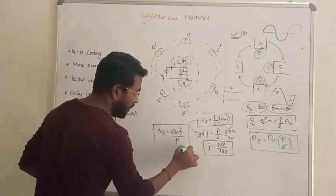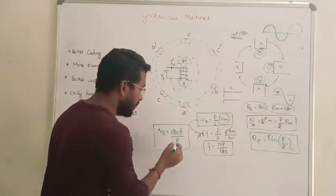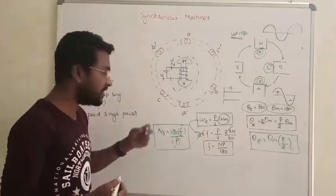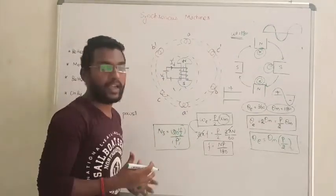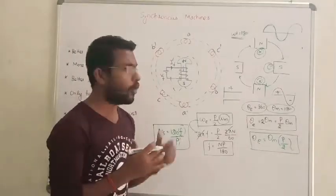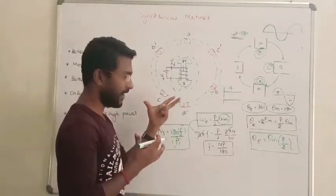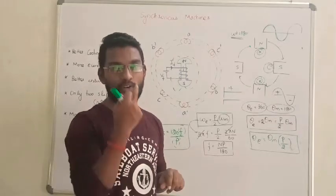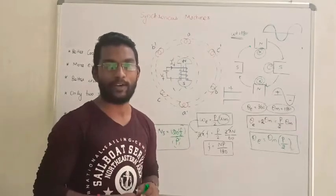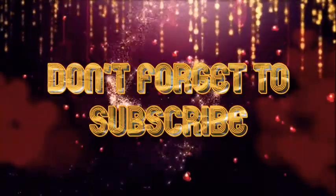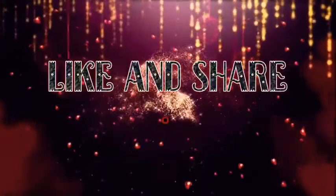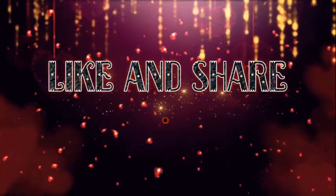So the machine operates at synchronous speed, which depends on the frequency and the number of poles — N equals 120F over P. That is how we derive the synchronous speed for a synchronous machine. I hope you all understand the logic. If you have any doubts, you can ask in the comment section. Thanks for watching.